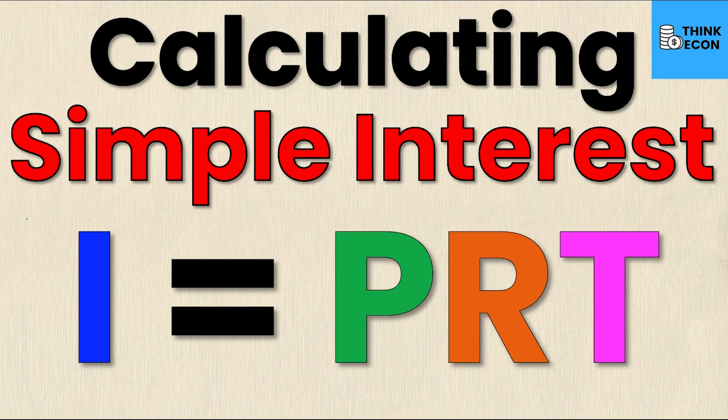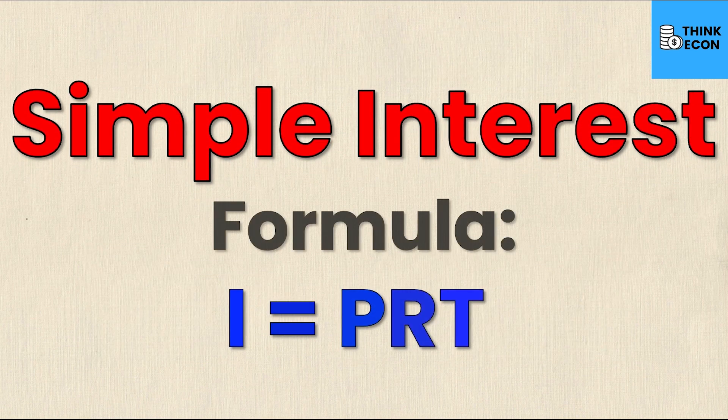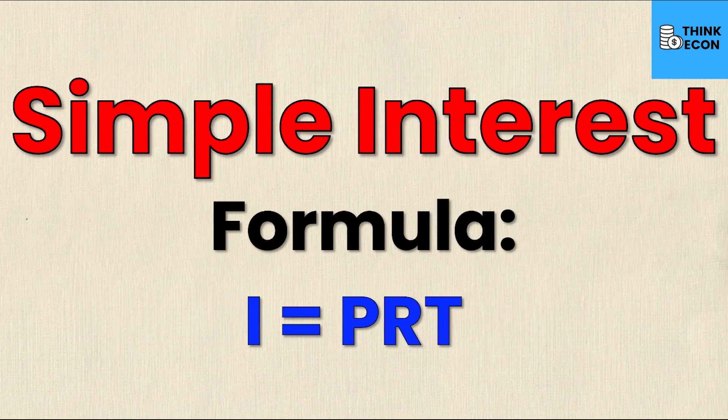To begin, when calculating simple interest we need to look at the formula, and the formula is as follows: I is equal to P times R times T. Let's take a look at what each of these individual variables mean.